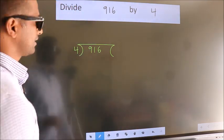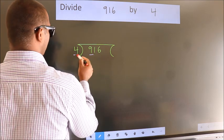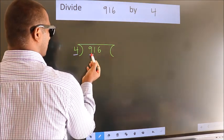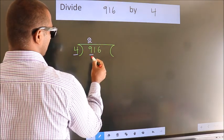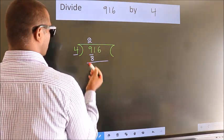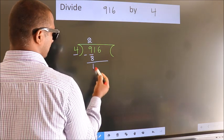Next. Here we have 9. Here 4. A number close to 9 in 4 table is 4 2s 8. Now we should subtract. We get 1.